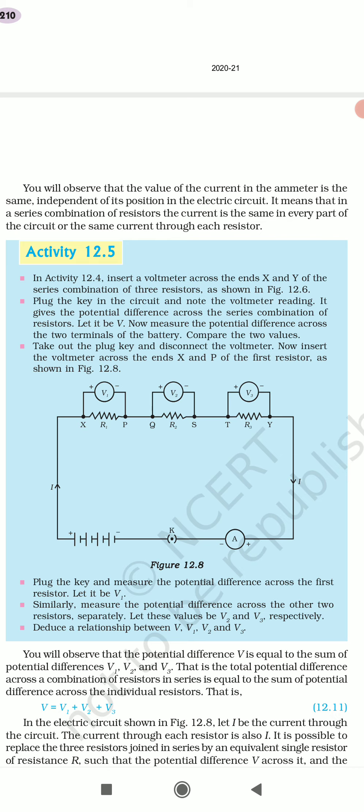You will observe that the value of current in the ammeter is the same, independent of its position in the electric circuit. Wo independent hoga — kisi bhi position pe laga lijiye, wahan pe current ka jo value hai wo hamesha same hi aayega, kyunki yeh series combination mein hai. It means that in the series combination, the current is the same at every part of the circuit and the same current flows through each resistor.